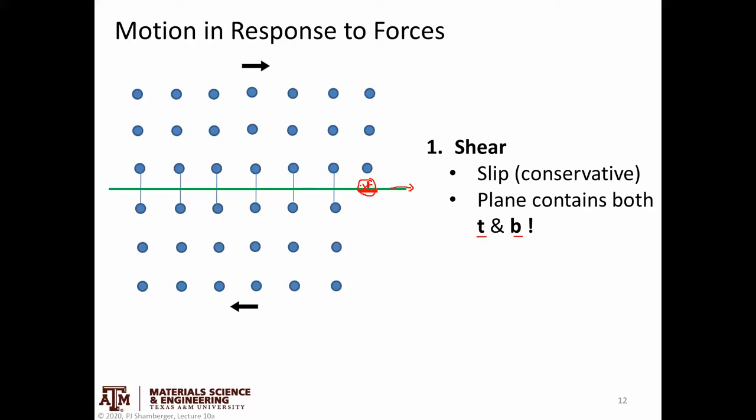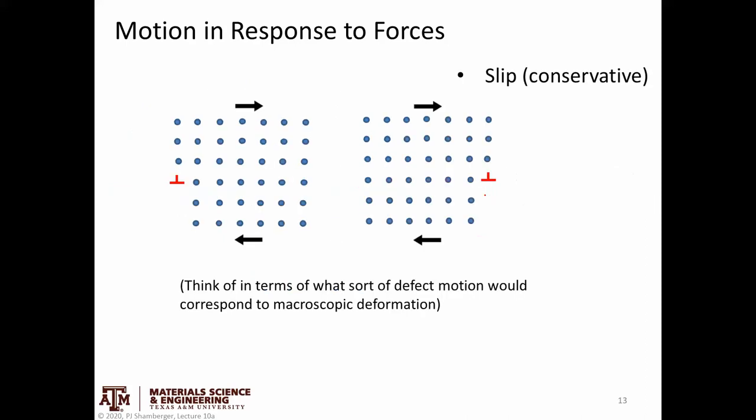How we define that sign affects how we define the sign of the Burgers vector. In either case, both vectors are in the same plane — and that's what makes it slip.